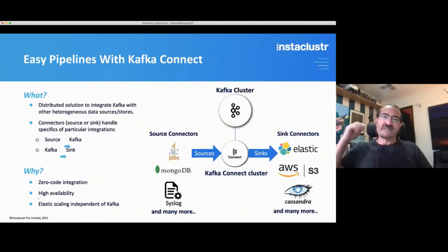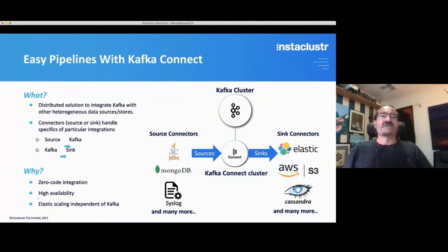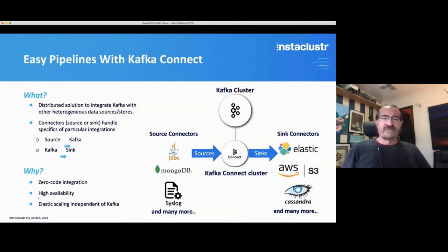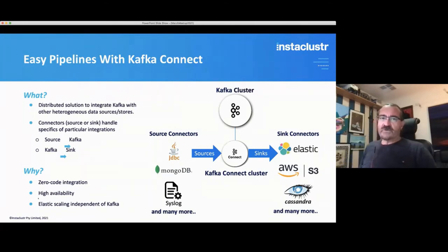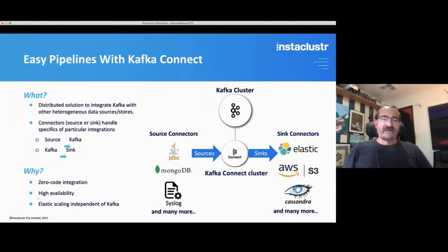The idea is that it's easy to build pipelines with Kafka Connect in particular. What is Kafka Connect? It's a distributed solution to integrate Kafka with other heterogeneous data sources and stores. The connectors come in either source or sink flavors — source connectors get data into Kafka, and sink connectors get data out of Kafka into whatever target system you have. Why would you use Kafka Connect? In theory, it offers zero-code integration, high availability, and elastic scaling independent of the Kafka cluster.